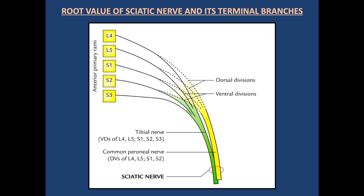This diagram shows the root value of the sciatic nerve and its terminal branches — the tibial nerve and common peroneal nerve. The tibial nerve in green derives from L4-5, S1, S2, and S3. The common peroneal nerve arises from the dorsal division of L4, L5, S1, and S2. Both nerves are derived from ventral rami — the ventral division and dorsal division make up the tibial nerve and common peroneal nerve.